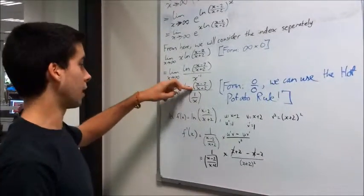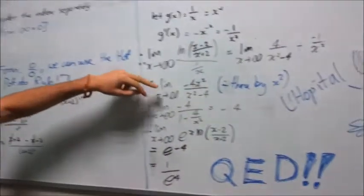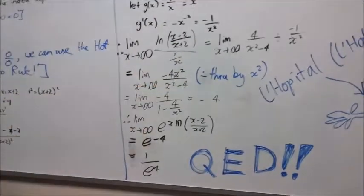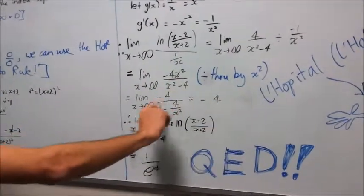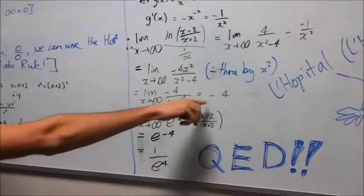From differentiating f(x) and g(x), we get the limit of x goes to infinity of [4/(x²-4)] / [-1/x²]. Dividing through by x² and subbing the limits here, we get -4.